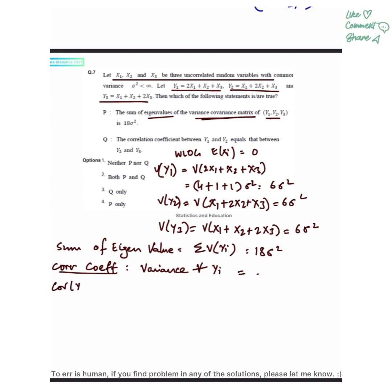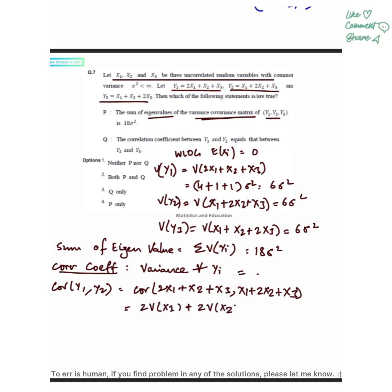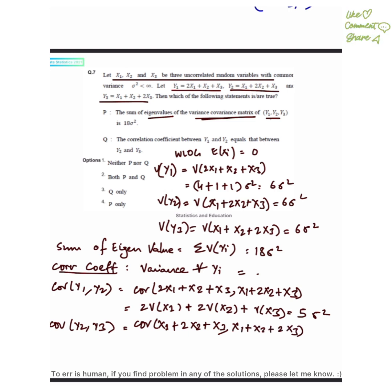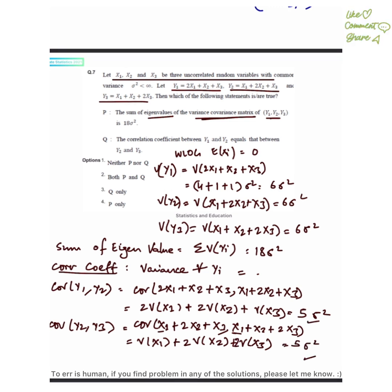The covariance between y1 and y2 equals 5 sigma squared. Similarly, covariance between y1 and y3, and covariance between y2 and y3, are both equal to 5 sigma squared. Both statements P and Q are correct.